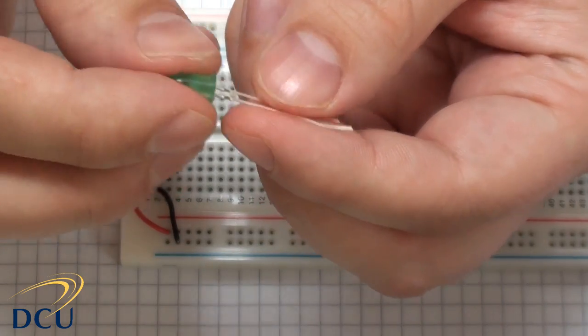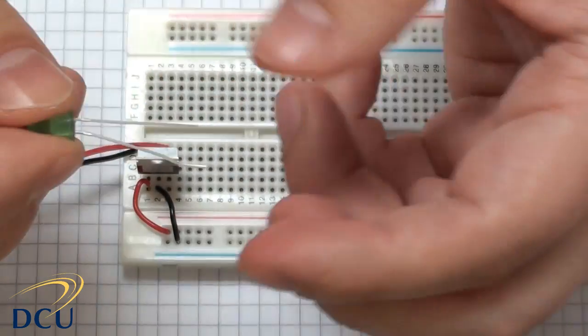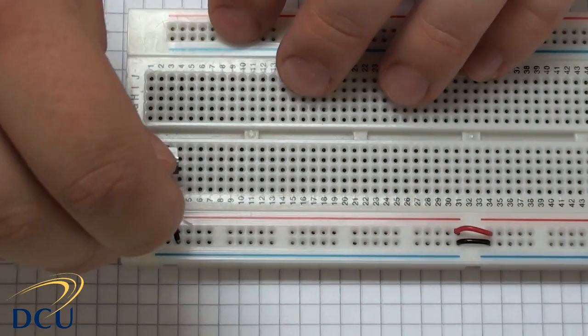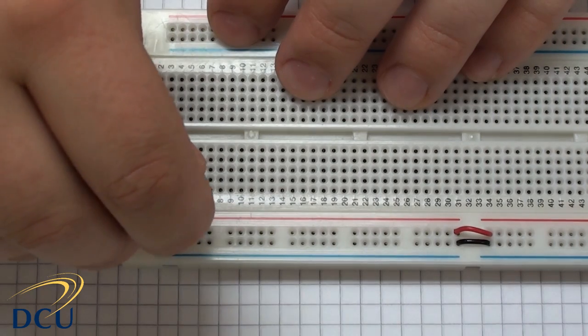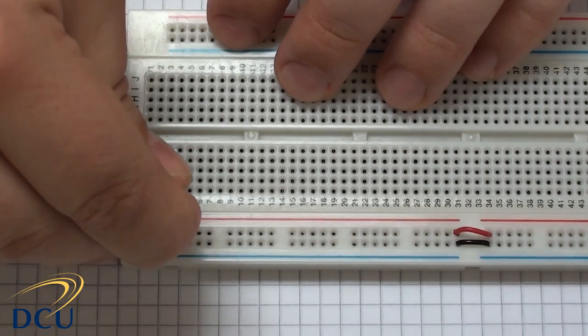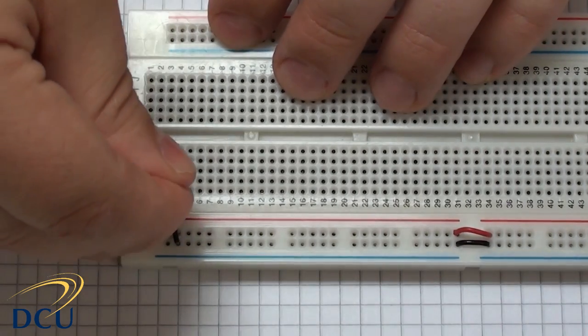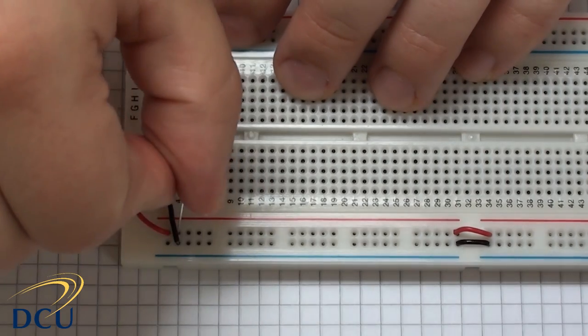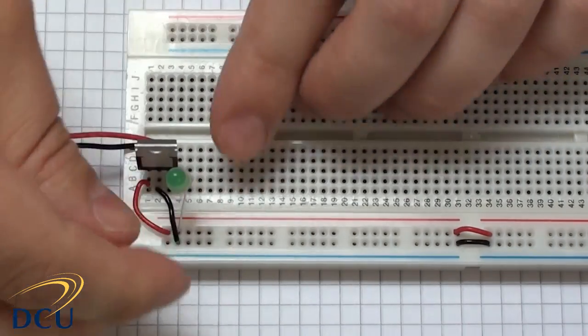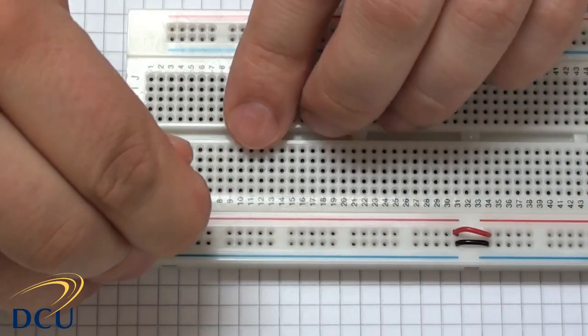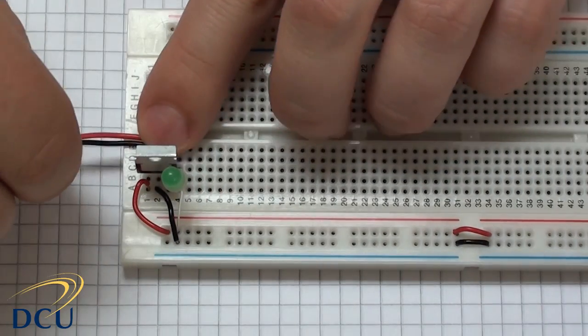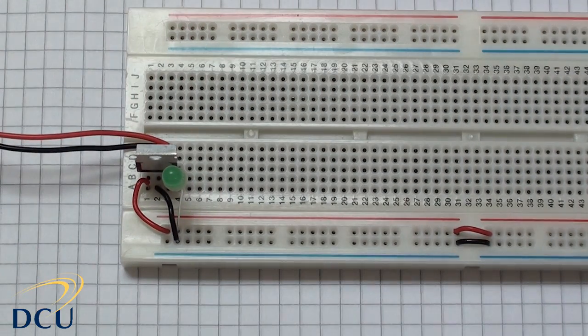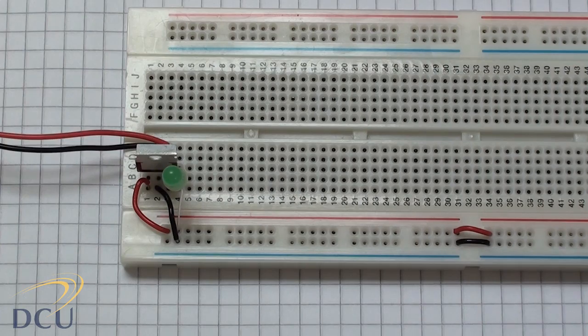So we want to connect this up. I've disconnected the battery from the supply, and I'm just going to connect it in. The longer leg is the positive leg, so we're going to connect that in here. I've connected it to the positive rail, and I've connected the negative leg to pin 4. So that's not connected to anything.